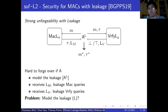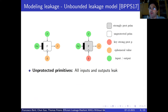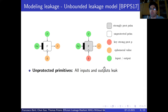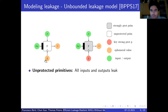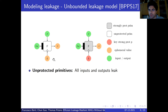The problem is that we need to model the leakage. We observe that cryptographic schemes use many primitives, so we use the unbounded leakage model introduced at FSE 17. The idea is to divide primitives into two types: unprotected primitives, shown in white, where all inputs and outputs leak — including secret ones — and strongly protected primitives, shown in green boxes, where all but the secret inputs leak, and outputs also leak.